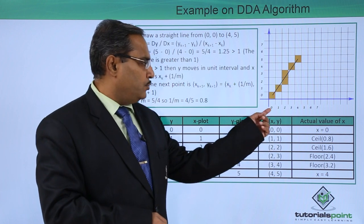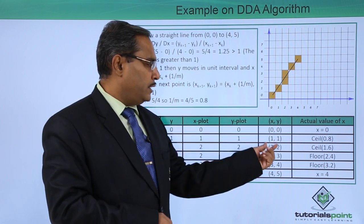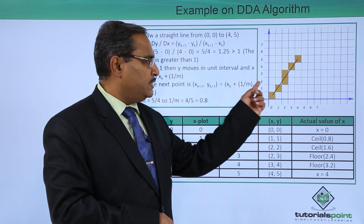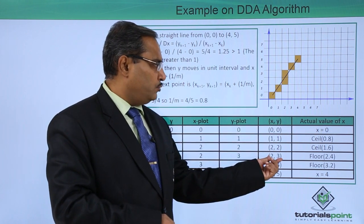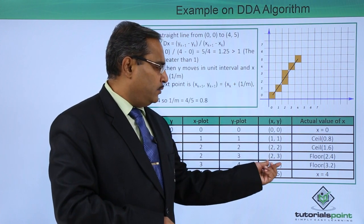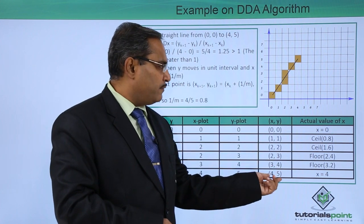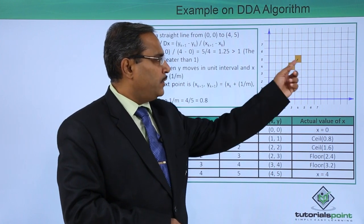See here (0, 0) this point, and then (1, 1) means this point, and then (2, 2) means this point, and then (2, 3) means this point again. Then we are having (3, 4) means this point and the last point is (4, 5) means this point. In this way the line will be drawn on the computer screen.